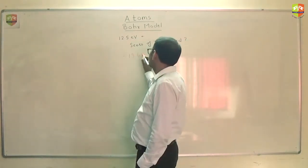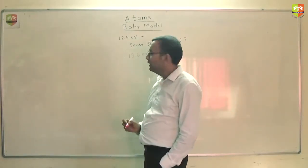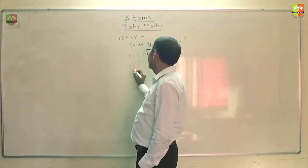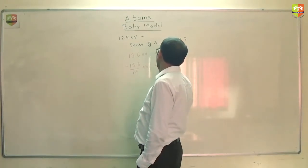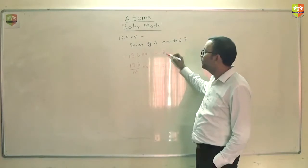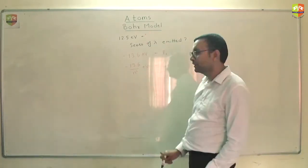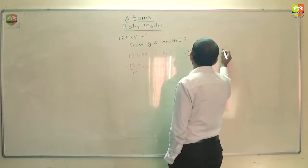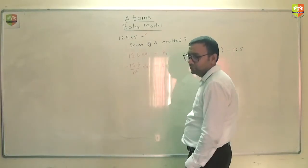Minus 13.6 electron volt is the initial energy E1. E2 will be minus 13.6 divided by n square electron volt. This is energy in nth orbit. Difference in these two energies should be equal to this. This is what is absorbed. That is the third postulate. Bohr's third postulate. Minus 13.6 by n square minus of minus 13.6 should be equal to 12.5. So what is n?